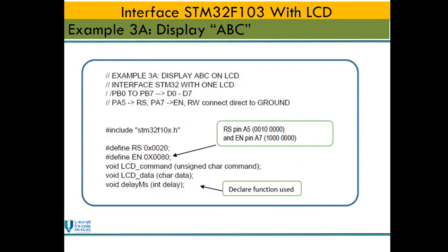Next we do Example 3a. You can refer to our textbook, page 66 for Example 3a. In this example, we want to display characters ABC to position 0, line 1 of the LCD. The connections are as shown previously in the circuit diagram.